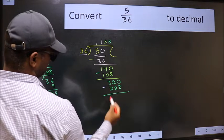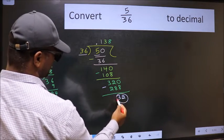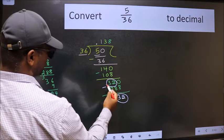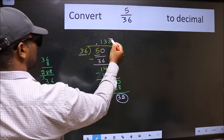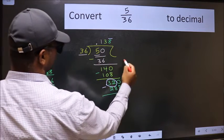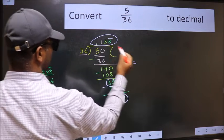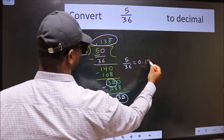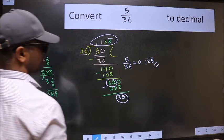We got 32 again. Earlier also we got 32, which means we get a bar on this number. Therefore, the decimal of 5/36 is 0.138 with a bar on this number. This is our answer.